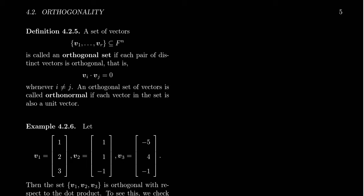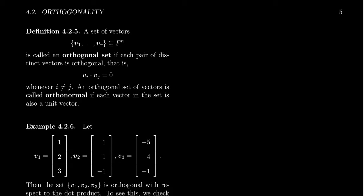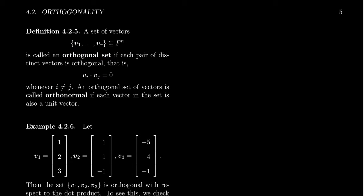We have described when a pair of vectors are considered orthogonal. In this video, we're going to talk about when a set of vectors is orthogonal. Suppose we have some set of vectors v1 all the way up to vr inside of F^n dimensional space. We say that the set v1 up to vr is an orthogonal set if each pair of distinct vectors is orthogonal — that is, if vi dot vj equals zero whenever the indices i and j are different from each other.